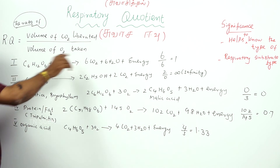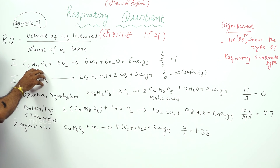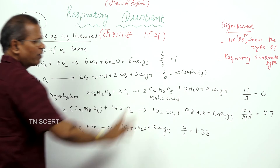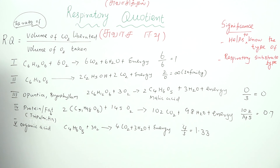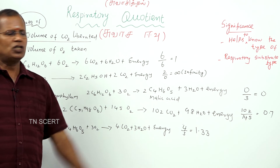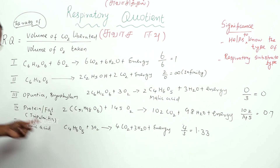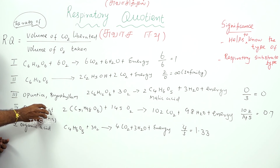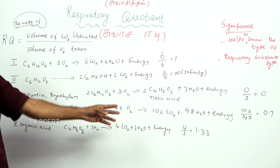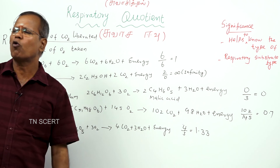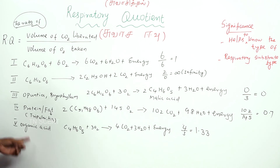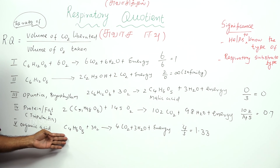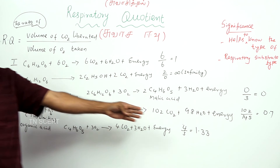To summarize: the respiratory quotient of carbohydrate (aerobic respiration) is 1. For anaerobic respiration or fermentation with ethyl alcohol, it is 2 by 0, which is infinity. For succulent plants like Opuntia and Bryophyllum where oxygen is taken but carbon dioxide is not evolved, it is 0 by 3, equal to 0. For fat (tripalmitin), 145 oxygen molecules are taken and 102 carbon dioxide molecules evolved, giving RQ = 0.7. For organic acid (malic acid), the respiratory quotient is 1.33.